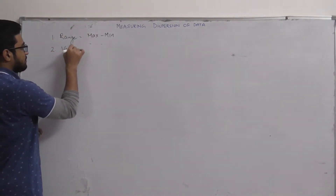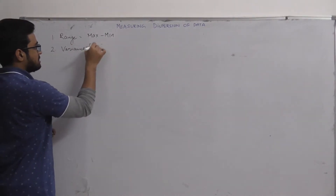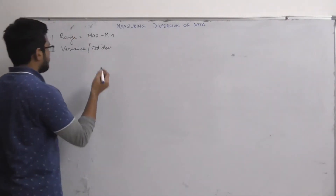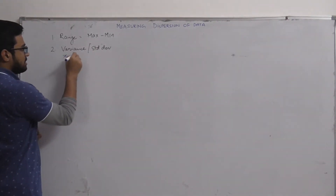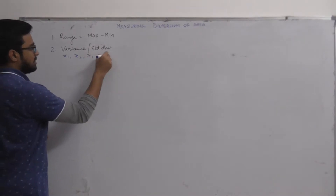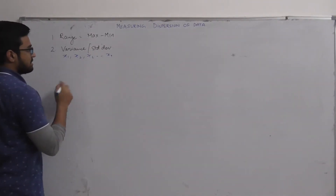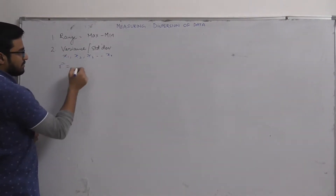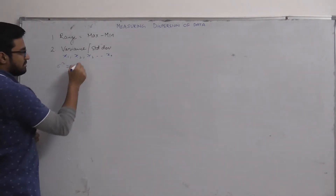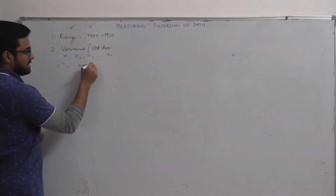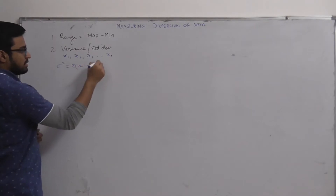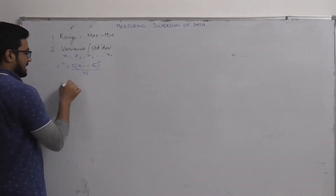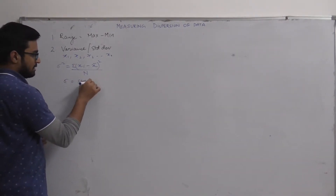The second metric for dispersion of the data is variance, or standard deviation. If we have observations x1, x2, x3 up to xn, then the variance is given by sigma squared equals the summation of (xi minus x-bar) squared, divided by n, where n is the number of observations. Taking the square root gives the standard deviation.